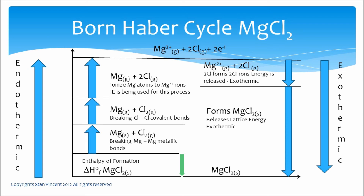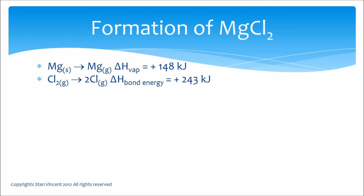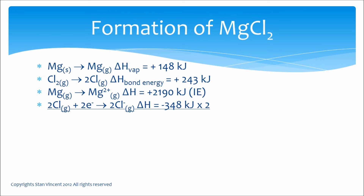Now for the actual numbers when preparing one mole of magnesium chloride. Changing magnesium solid to magnesium gas requires 148 kJ — this is the enthalpy of vaporization. Changing one mole of chlorine molecules into two moles of chlorine atoms requires the bond dissociation energy: +243 kJ, an endothermic change. Changing magnesium gas to Mg²⁺ requires the ionization energy of 2190 kJ.